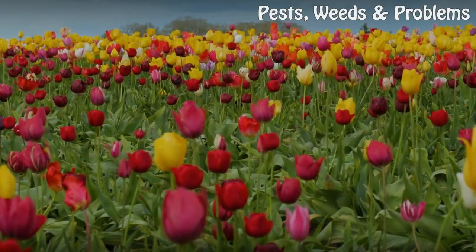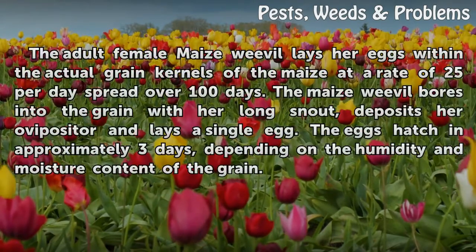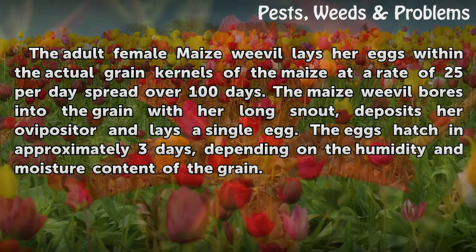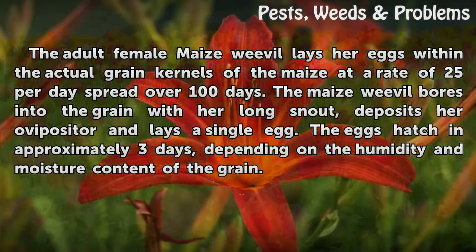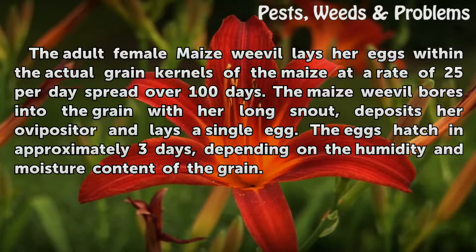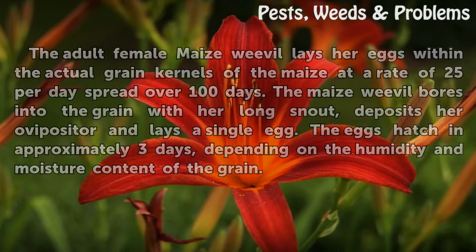Reproduction. The adult female maize weevil lays her eggs within the actual grain kernels of the maize at a rate of 25 per day spread over 100 days. The maize weevil bores into the grain with her long snout, deposits her ovipositor, and lays a single egg. The eggs hatch in approximately three days, depending on the humidity and moisture content of the grain.